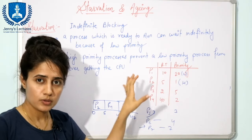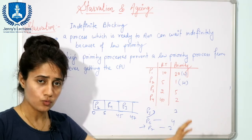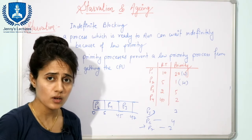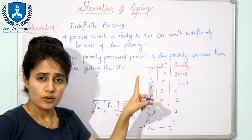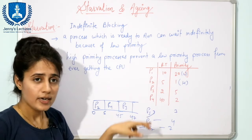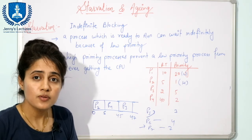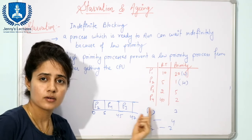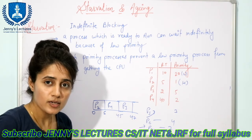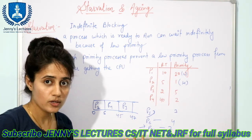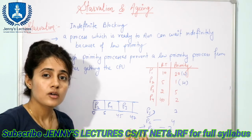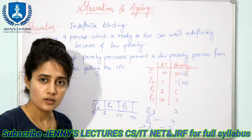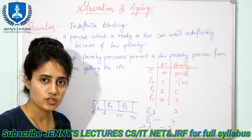P1 will wait indefinitely although P1 is ready to run. P1 is in the ready queue, but P1 is waiting because higher priority processes are coming and the CPU is biased due to priority scheduling. CPU is allocated to processes having higher priority, and that is why P1 is waiting. This is known as starvation — P1 has to wait for an indefinite amount of time.